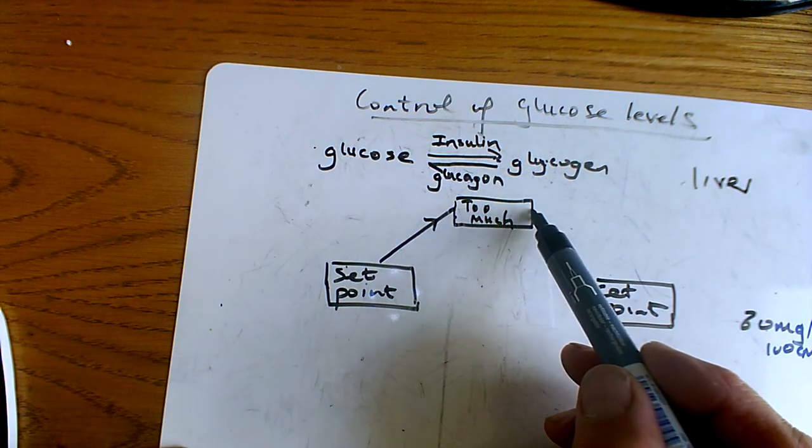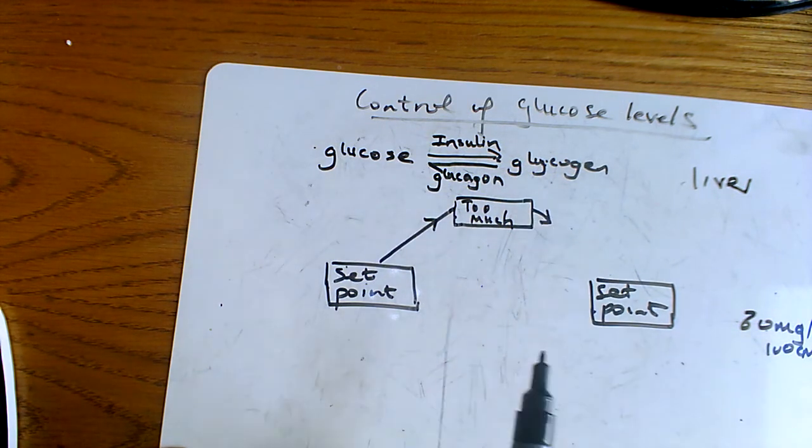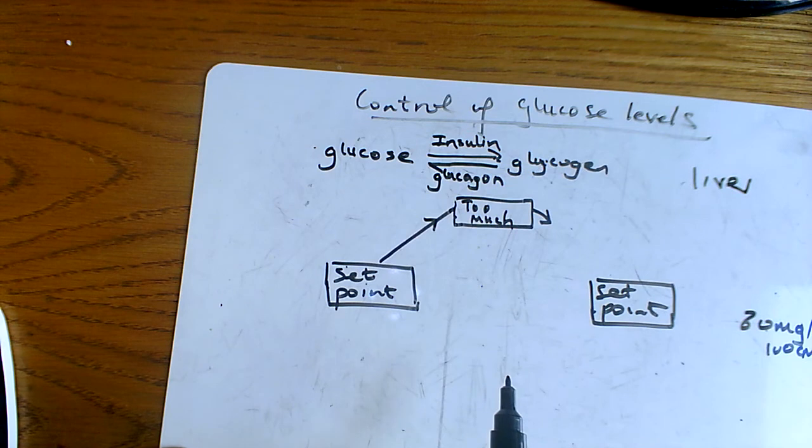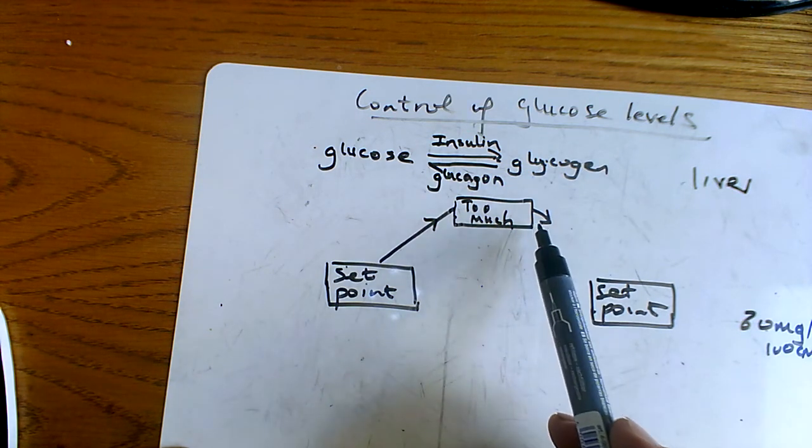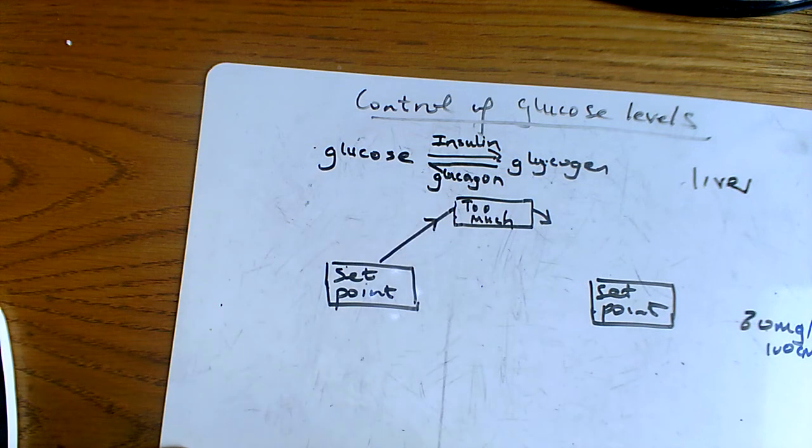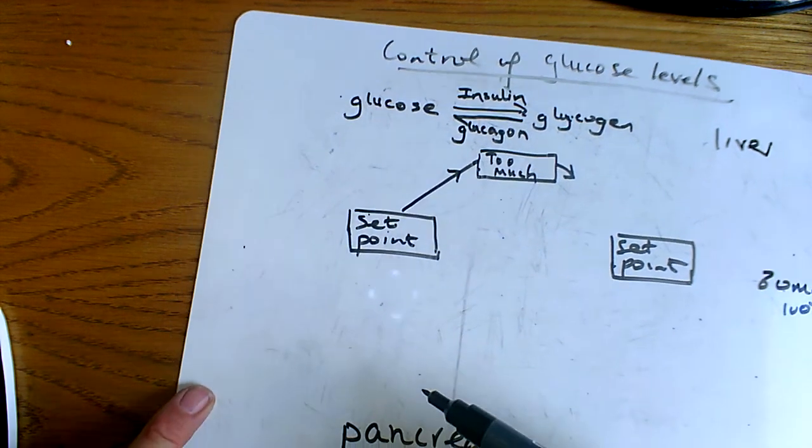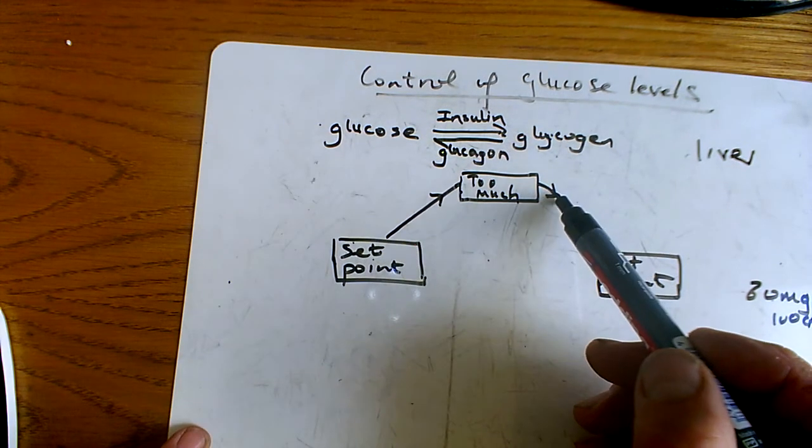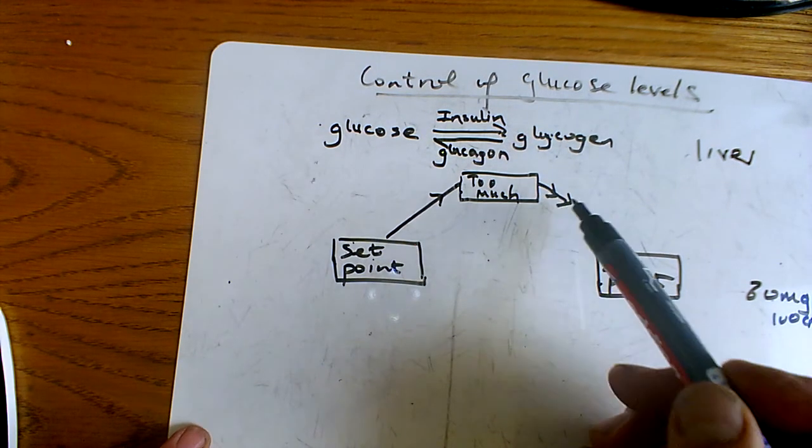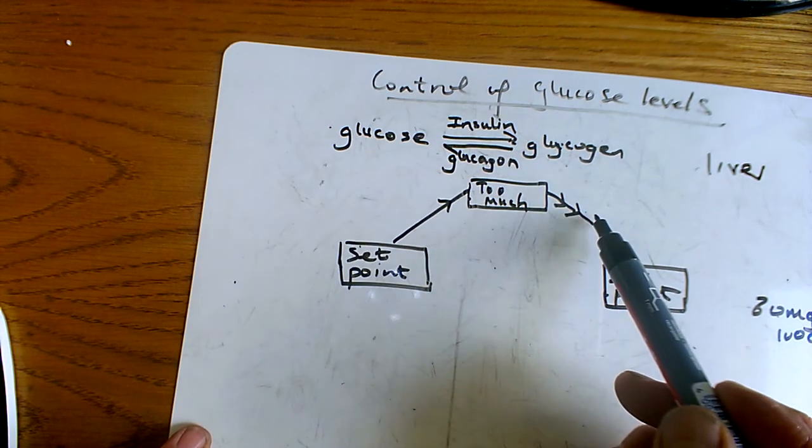So what does it start to do? The glucose levels start to come down. Now the glucose level at this point here is still too high, so cells of your pancreas continue to produce insulin and the level of glucose continues to fall.